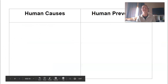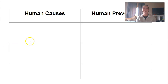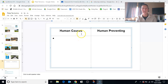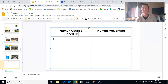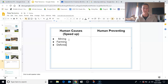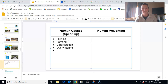Now we're going to fill in our chart. I'll pop out of presentation mode so I can type in our answers for human causes and human preventions. Ways that humans speed up erosion: mining — digging up the dirt; farming; deforestation; overwatering our crops and plants; construction is another big one; and even us when we walk around — walking trails or paths can cause erosion.